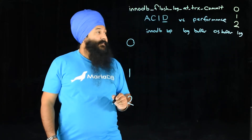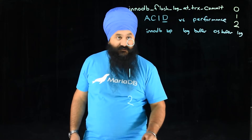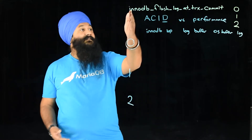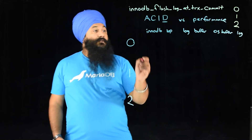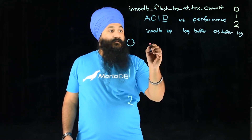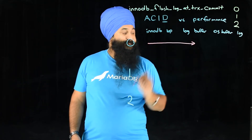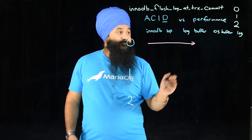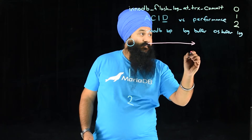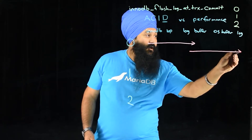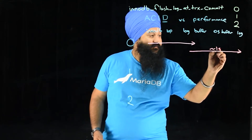Let's start with zero. When InnoDB flush log at transaction commit — sometimes called iflact for the initials — is set to zero, you do a write and it goes through memory, through the buffer pool, into the log buffer. After that, the write is flushed from the log buffer all the way to the log file on disk every one second, or when the OS flushes.